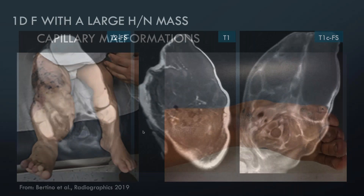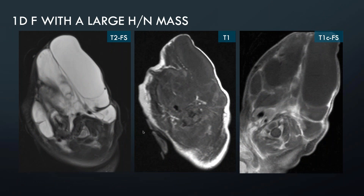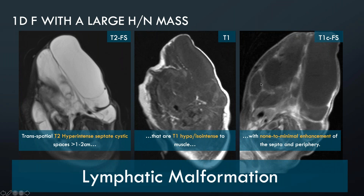Moving on with a deeper malformation case — a one-day-old female with a large head and neck mass. On the T2 fat-saturated sequence there is a large cystic structure with T1 darkness, appearing somewhat iso-intense to adjacent muscle. After gadolinium-based contrast with fat saturation, the area does not fill in, suggesting it is not very vascular nor connected to vascular channels. These findings lead us to a lymphatic malformation. An important consideration, especially in head and neck lymphatic malformations, is that they can become super-infected after hemorrhage within the lesion.